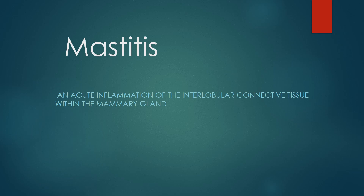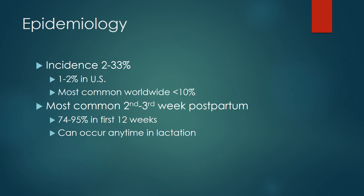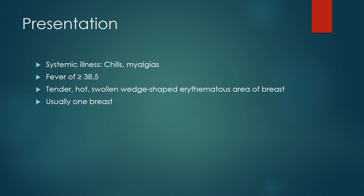Mastitis is an acute inflammation of the intralobular connective tissue within the mammary gland. Incidence is 2 to 33% and 1 to 2% in the US, and it is most common in the second and third week postpartum.